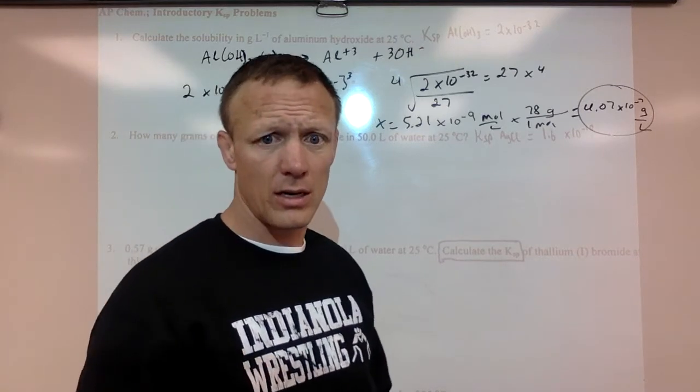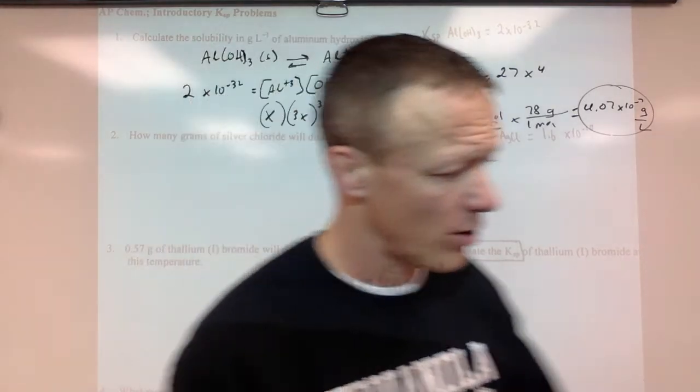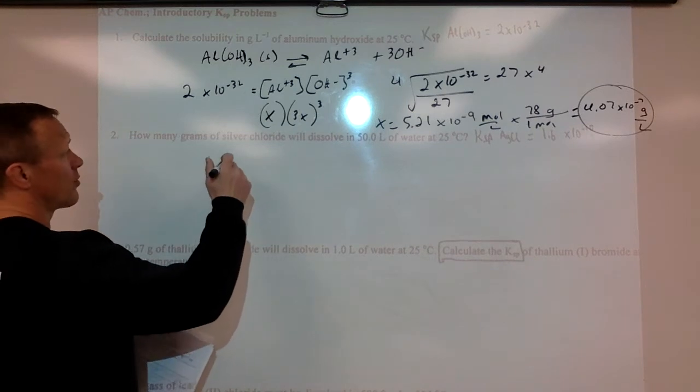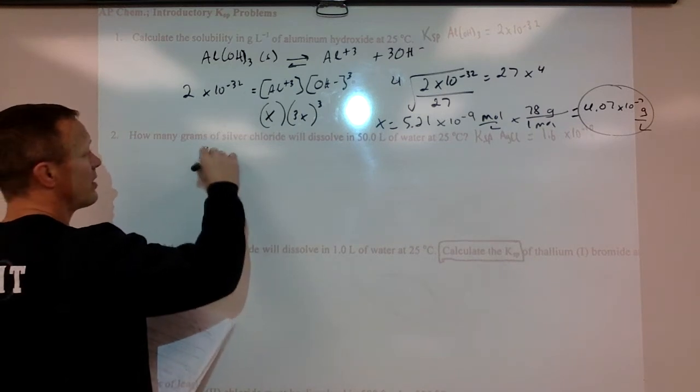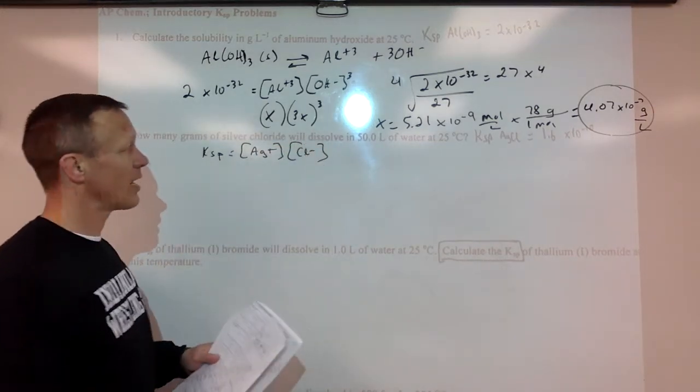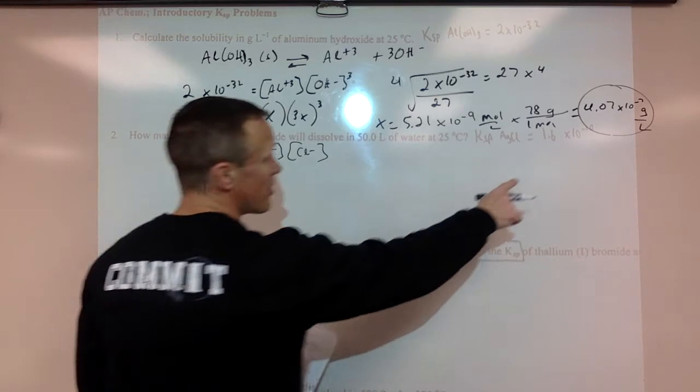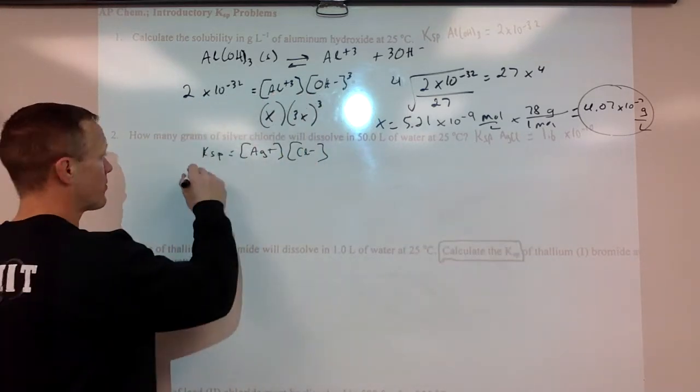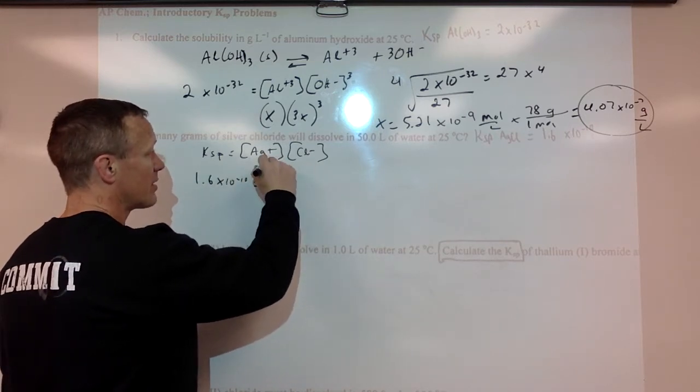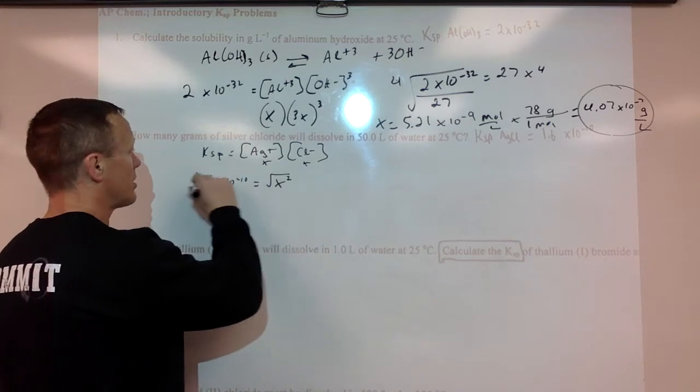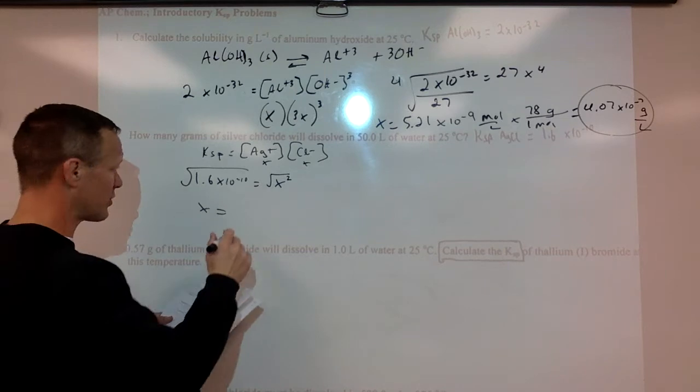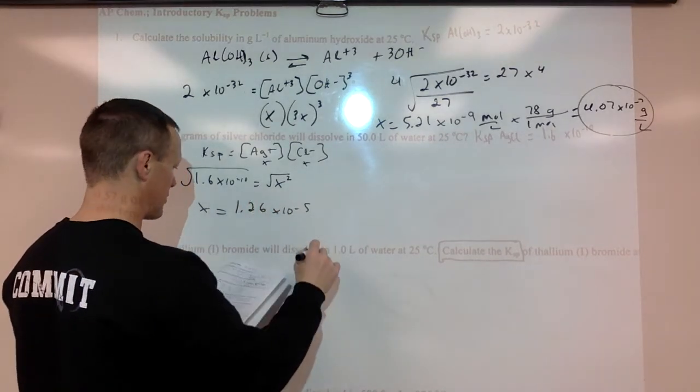Second one, how many grams of silver chloride dissolved in 50 liters of water at 25 degrees Celsius? Pretty similar problem. So silver chloride, KSP equals concentration of silver ions times concentration of chloride ions. The KSP I have right here is 1.6 times 10 to the negative 10. So we can put in X for that, X for that, which is going to be X squared. Take the square root and X is 1.26 times 10 to the negative 5.